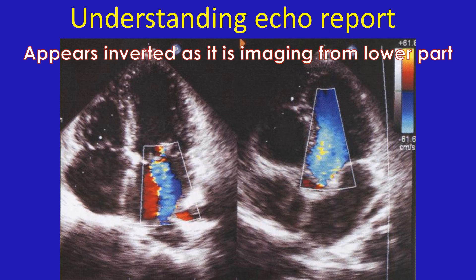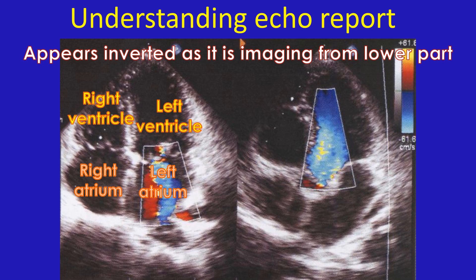In addition to the measurements, there will also be a qualitative report on whether the chambers are enlarged or thickened and whether they are contracting well or not. An enlarged heart chamber is mentioned as dilated, while a thickened one is mentioned as hypertrophied. The important chambers are the thin-walled upper and lower chambers known as the right and left atrium, and the thicker lower chambers known as the right and left ventricle.